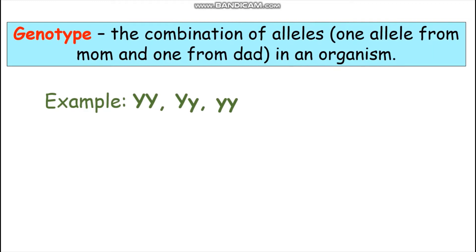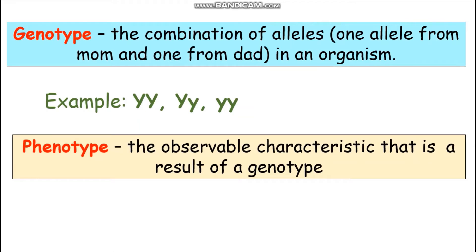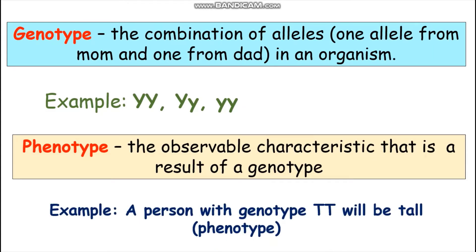It is easy to confuse genotypes with phenotypes, but they are completely different. A phenotype is an observable characteristic that is a result of a genotype. For example, the combination of alleles in a genotype may result in a person having a certain height. So if that person has the genotype BIG T BIG T, then that person will be TALL — and TALL is the phenotype, the characteristic you see.